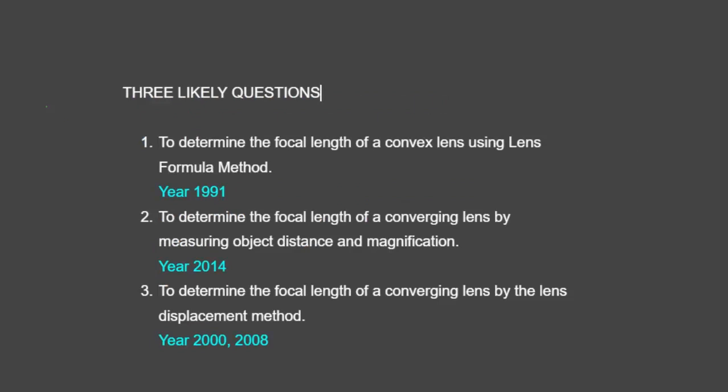Here are the three likely questions. The first could aim at determining the focal length of a convex lens using the lens formula method — WAEC in 1991 asked a question based on this objective. The second is to determine the focal length of a converging lens by measuring object distance and magnification — WAEC set this in 2014. The third is to determine the focal length of a converging lens based on the lens displacement method — WAEC set this in 2000 and 2008.